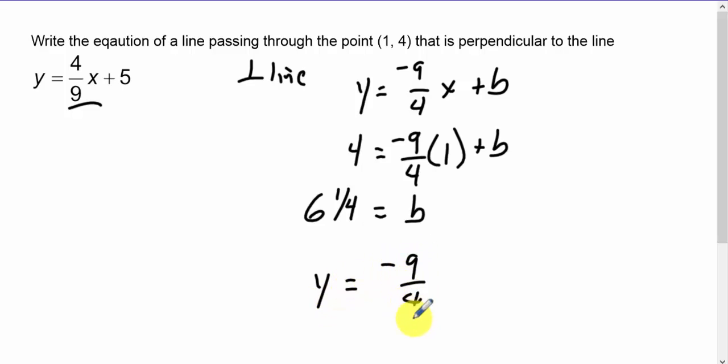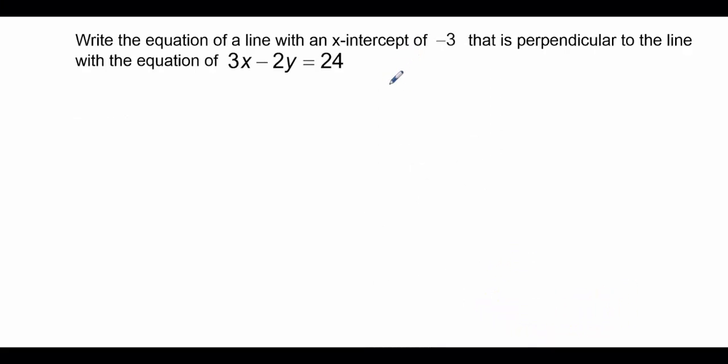In this problem we're asked to write an equation of a perpendicular line to this line having an x-intercept of -3, which is basically a fancy name for point (-3, 0) that it goes through. The first thing we'll do is just isolate the y value. I have 3x - 24 = 2y, so 3/2 x - 12 = y. I need a perpendicular, so the perpendicular slope is -2/3 because we have opposite reciprocal slopes.